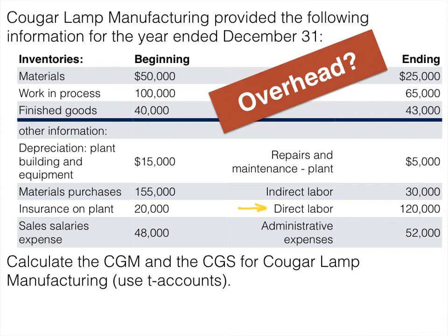Let's first figure out what makes up overhead, since that helps us calculate cost of goods manufactured and cost of goods sold. Overhead is made up of indirect materials, indirect labor, and other overhead — anything to do with the plant or factory. Depreciation on the plant, building and equipment: we see the word 'plant,' so it's overhead. Materials purchases go in the materials account, not overhead. Insurance on the plant: keyword 'plant,' that is overhead.